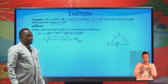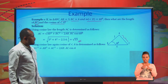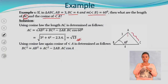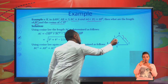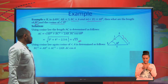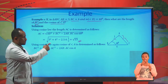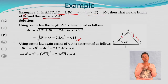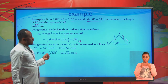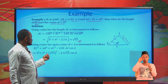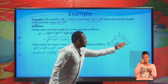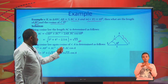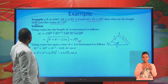Now we are also asked to find cosine of angle A. We start from the cosine law: BC squared equals AB squared plus AC squared minus 2 times AB times AC times cosine A. Substituting: 4 squared equals 3 squared plus the square root of 13 squared minus 2 times 3 times the square root of 13 times cosine A.